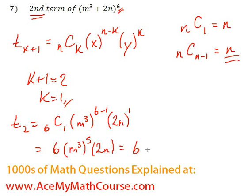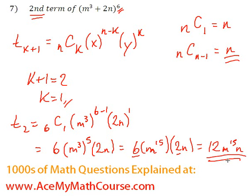Great, now we simplify. m³ to the power of 5 is just m^15 times 2n. 6 times 2 is 12. So we get 12m^15n. And that's it. This is the second term of our expansion.